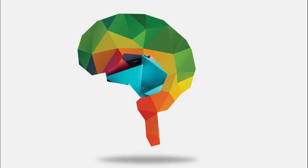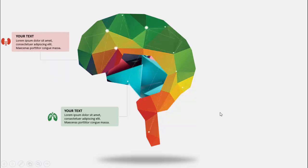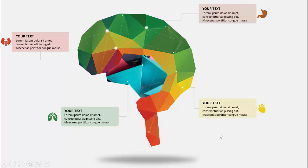In today's tutorial I'm going to show you how to create this brain shape infographic slide in PowerPoint. I have created this brain shape in PowerPoint and added a geometric shape in the background. When I click, it will start showing signals transmitting to different parts of the brain, then show the first option with a title, detailed text, and icon, then the second, third, and fourth options.